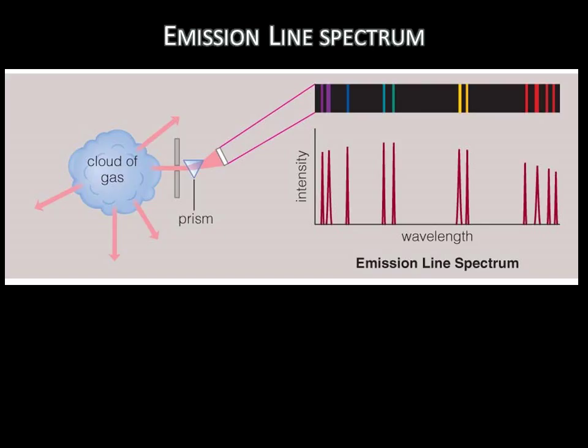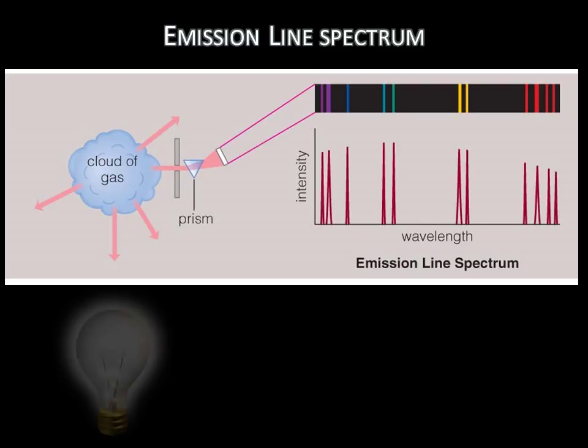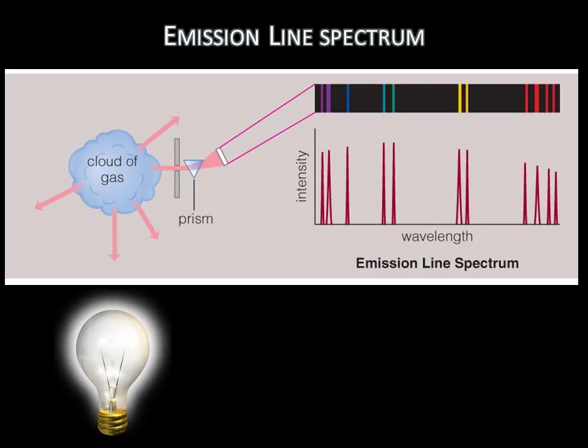Now let's consider an emission line spectrum. Imagine the same situation as for the absorption line spectrum, only we move the light bulb to below the cloud of gas. The light bulb is still giving the cloud photons of all different energies, but from this angle, the prism can't see the light bulb. This means we won't see a continuous rainbow in the background like we did before.